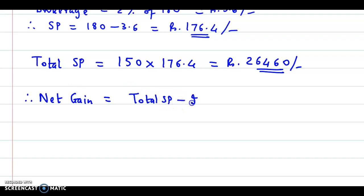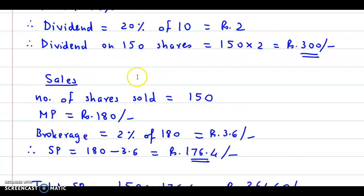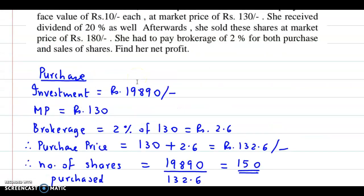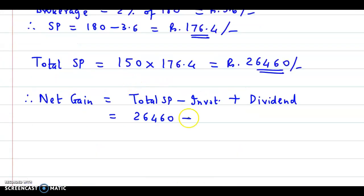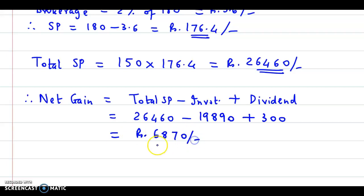Now let us calculate the net profit. Net profit equals total selling price minus investment plus dividend. Total selling price is rupees 26,460, investment is rupees 19,890, and dividend is rupees 300. So net profit = 26,460 minus 19,890 plus 300, which gives us rupees 6,870. So the net gain is rupees 6,870.